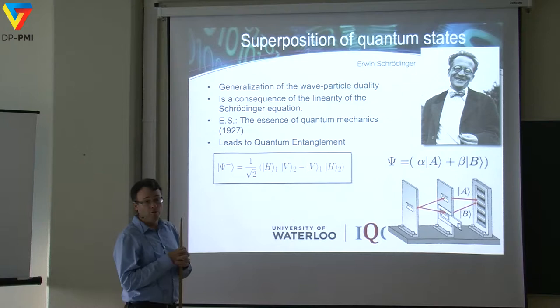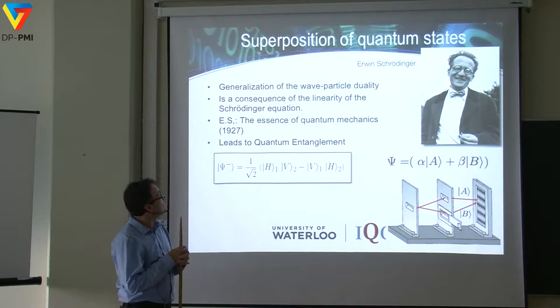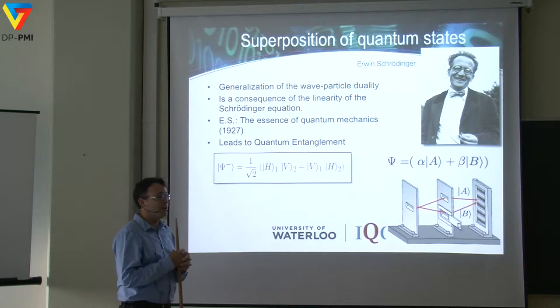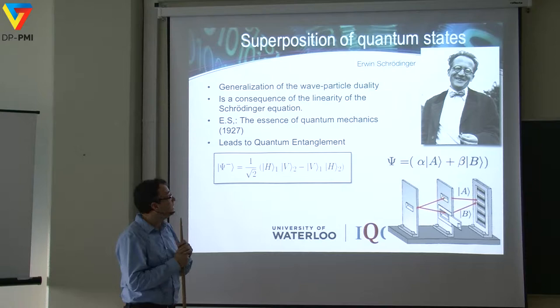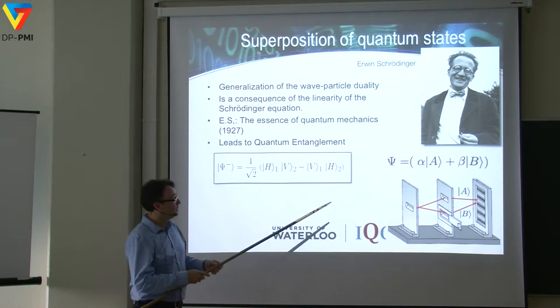In the early days of quantum mechanics, people like Erwin Schrödinger discovered that quantum mechanics has counterintuitive features. One of them is superposition — a very famous concept. As Schrödinger would put it, one of the essential features of quantum mechanics is superposition, and also entanglement. He called it the essence of quantum mechanics.